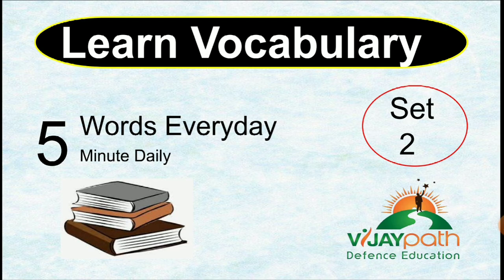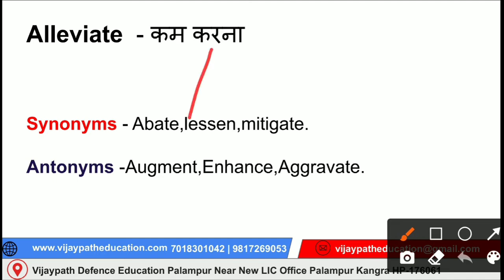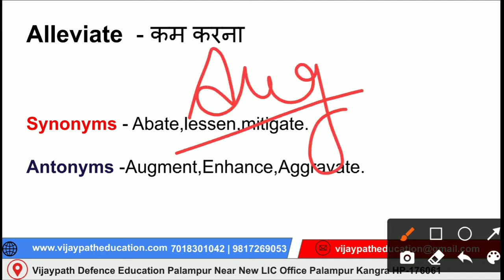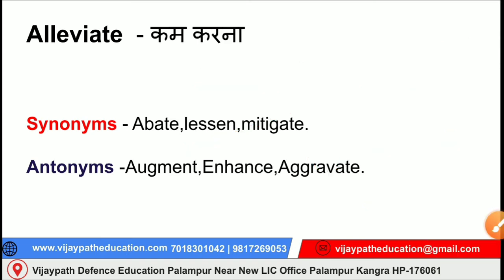The first word is 'alleviate'. Alleviate means to reduce something (किसी चीज़ को कम कर देना). Its synonyms are abate, lessen, mitigate — mitigate is a very important word. Its antonyms are augment, enhance, aggravate. Note that 'augment' contains the root 'AUG', which means good and well, so it always gives a positive sense.